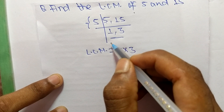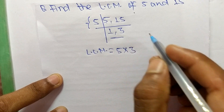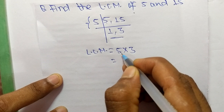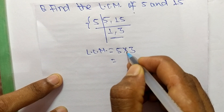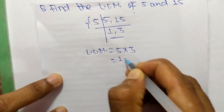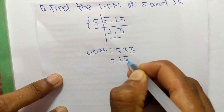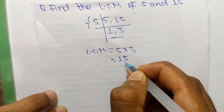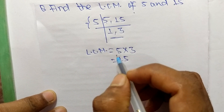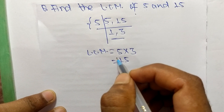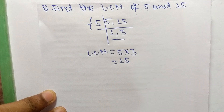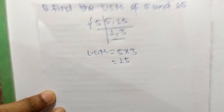By multiplying 5 times 3 we get 15, so 15 is the LCM of 5 and 15. This much for today, and thanks for watching.